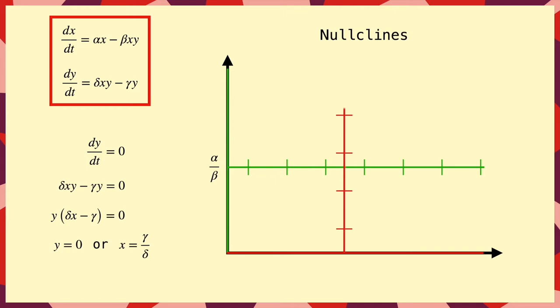So, we'll draw these on the phase plane as well, in a different colour, this time with little ticks telling us that we need to cross these lines horizontally.